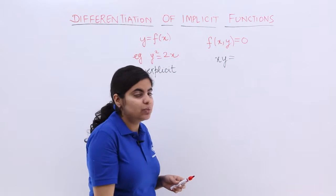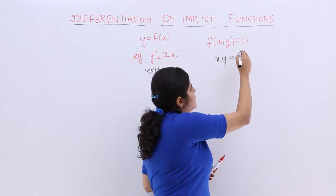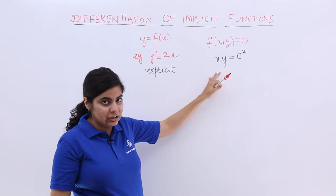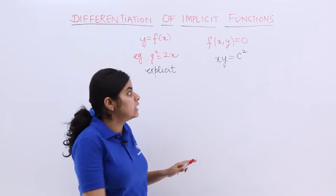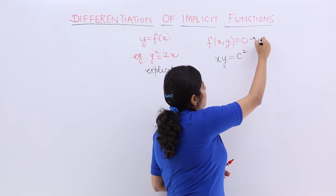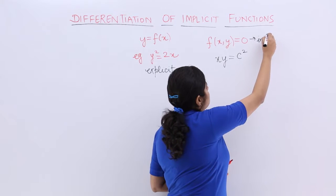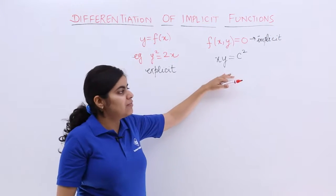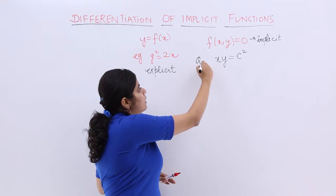That means if I have an expression called as xy is equal to c square. I am not telling you whether it is explicit or implicit. In this expression, definitely I would like to tell you that it is implicit. Suppose I have this question wherein I have xy is equal to c square given to me.